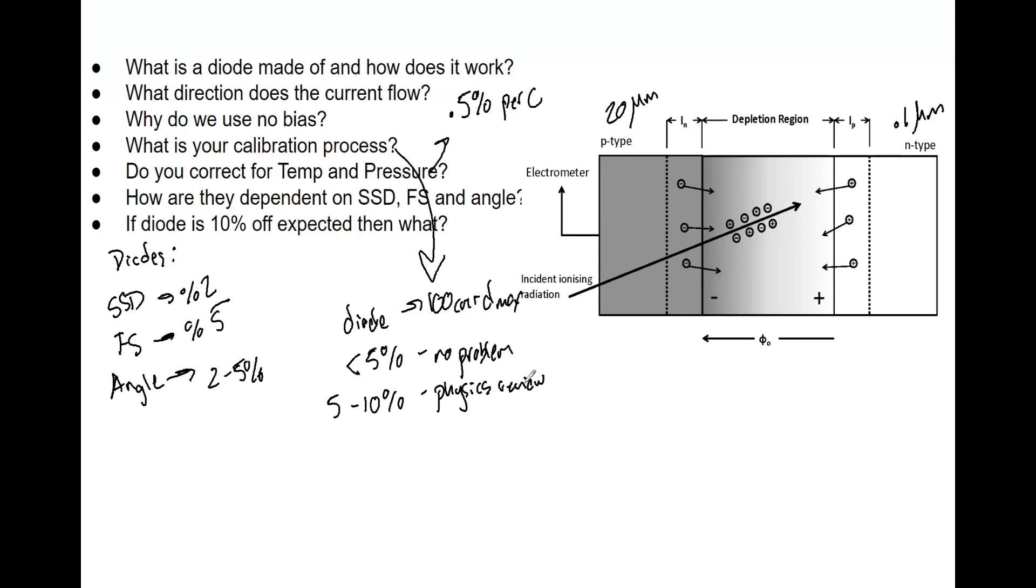If it's greater than 10%, you do a full-on investigation and I would recommend not using that diode until that investigation is over and you've either deemed there were settings or something wrong with the setup, or that diode may need replaced. Those are the action levels you would want to use within a clinic.